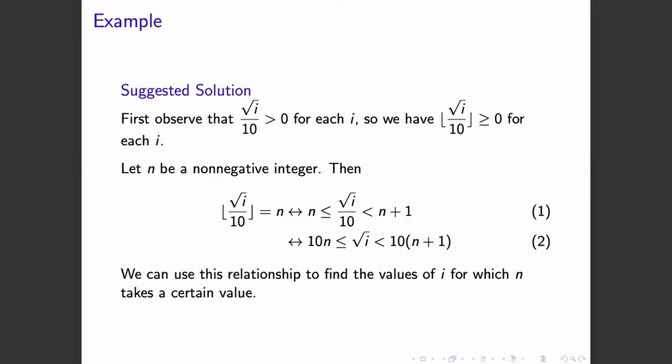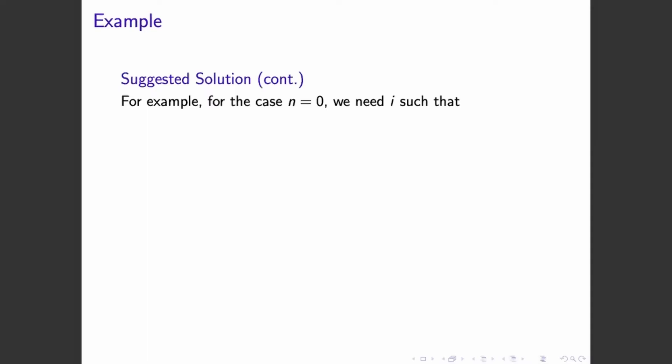We could find the values of i for which n takes a certain value. So for example, when we have n is equal to 0, we need the values of i to satisfy this inequality. So we need square root of i to be at least 0, but less than 10. So i can be from 0 up to 99. So n will be equal to 0 for the first 99 values of i.